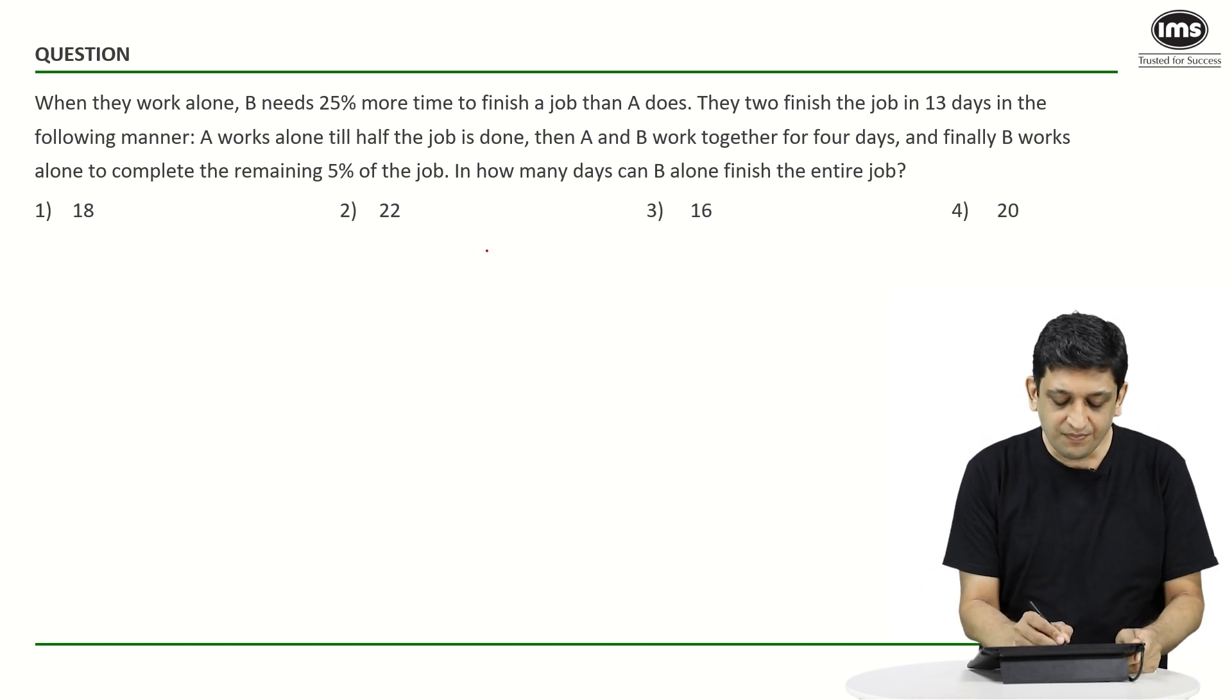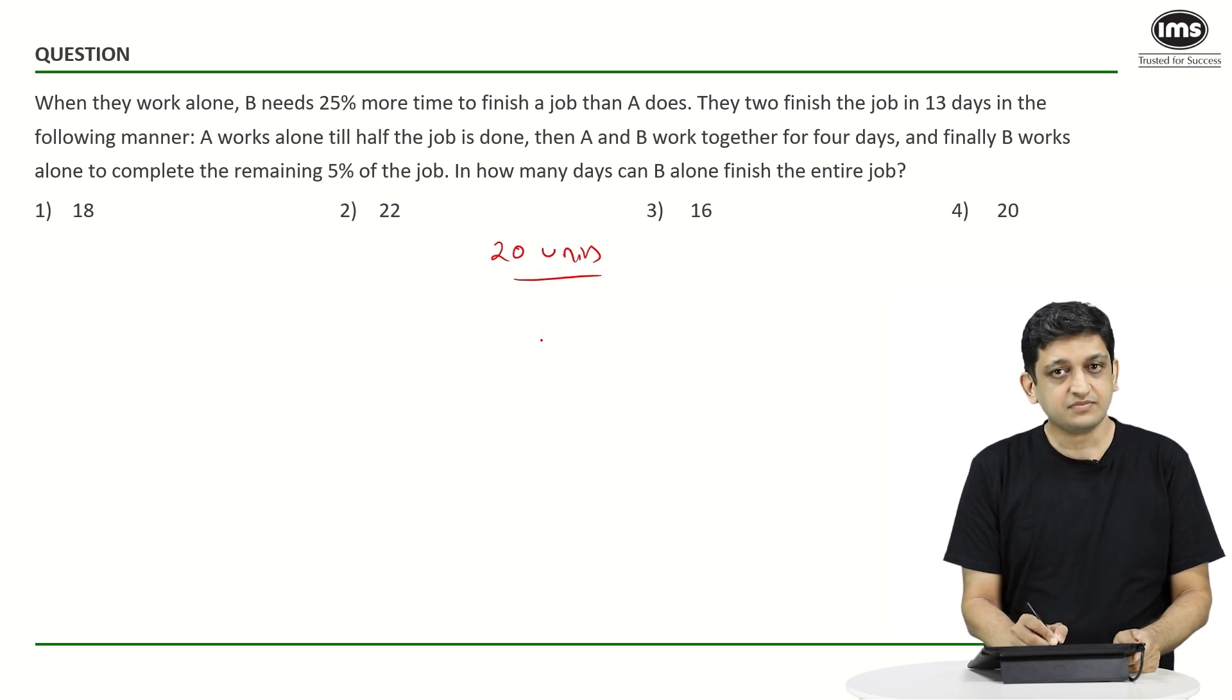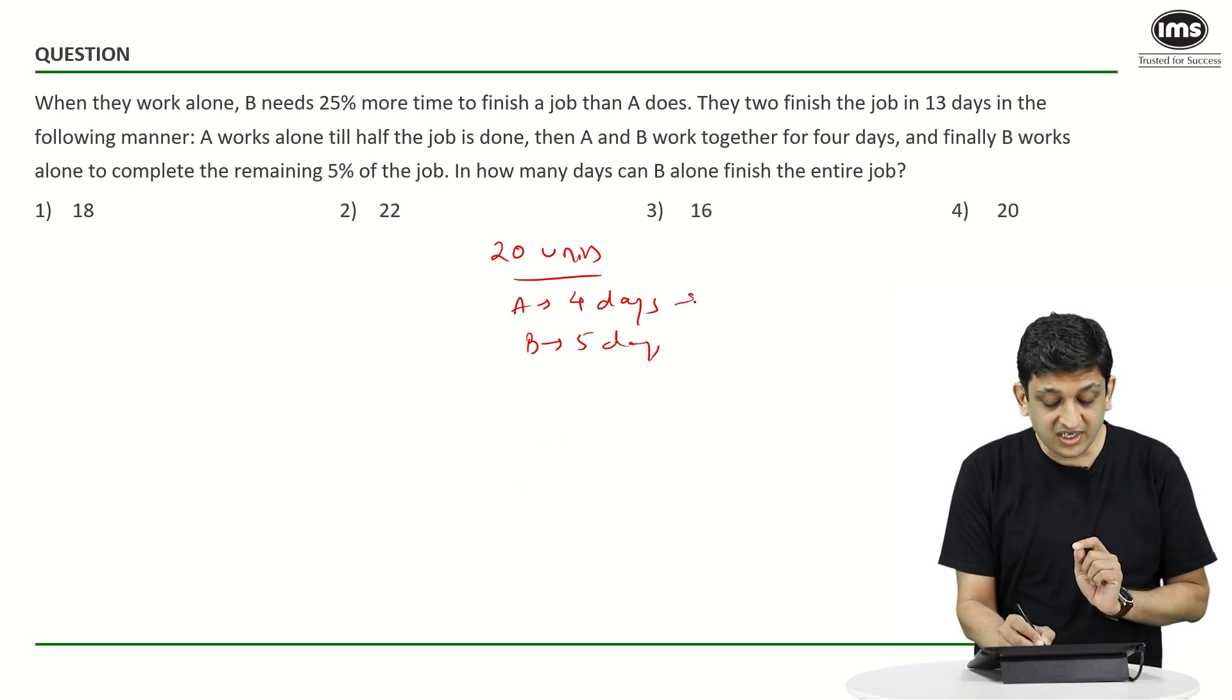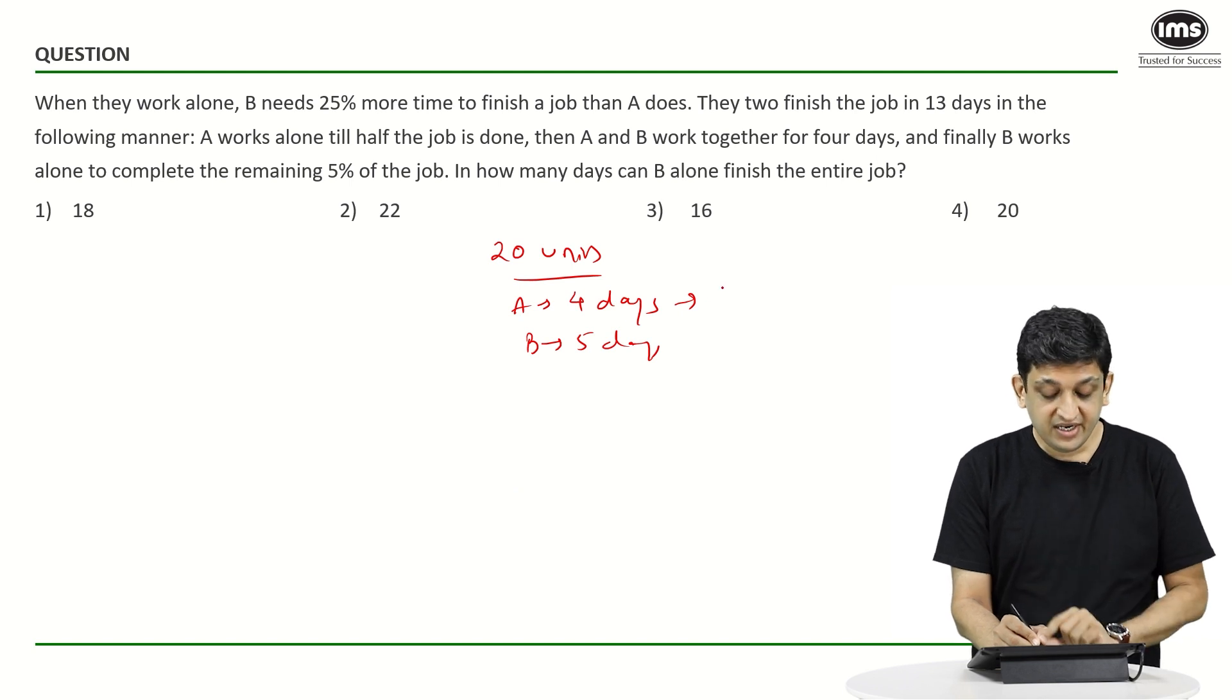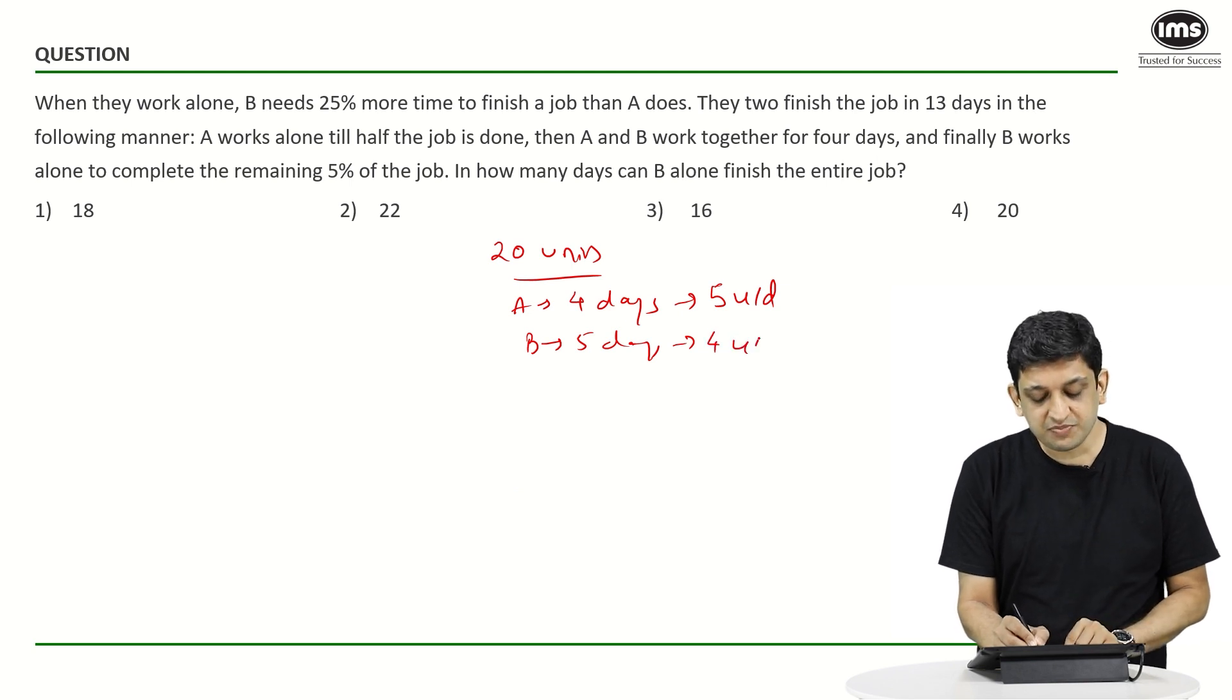If you are finding it difficult to understand this, you can just visualize a normal scenario wherein let's say there are 20 units of work to be done. Let's say that A does this piece of work in 4 days. B will do this piece of work in 5 days. So if you look at the amount of work that is done by A per day, it is going to be 5 units per day, and the amount of work done by B is going to be 4 units per day.